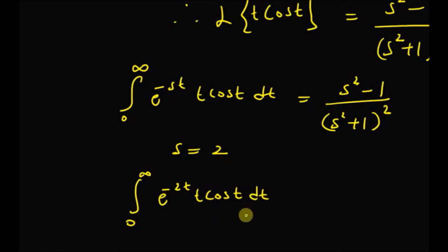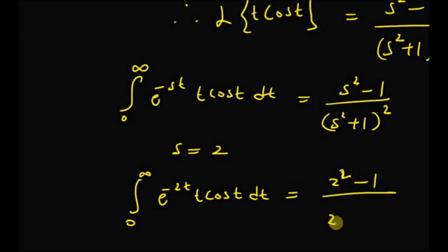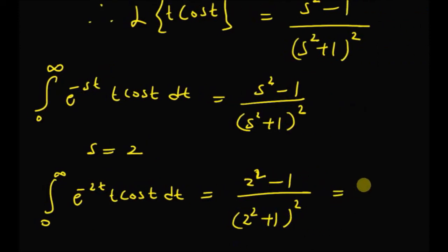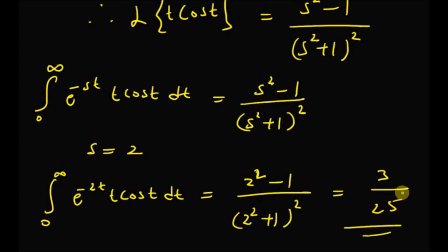This equals (2² − 1)/(2² + 1)², which simplifies to 3/25. Thus we can use the definition of the Laplace transform to evaluate definite integrals. Thanks for watching.